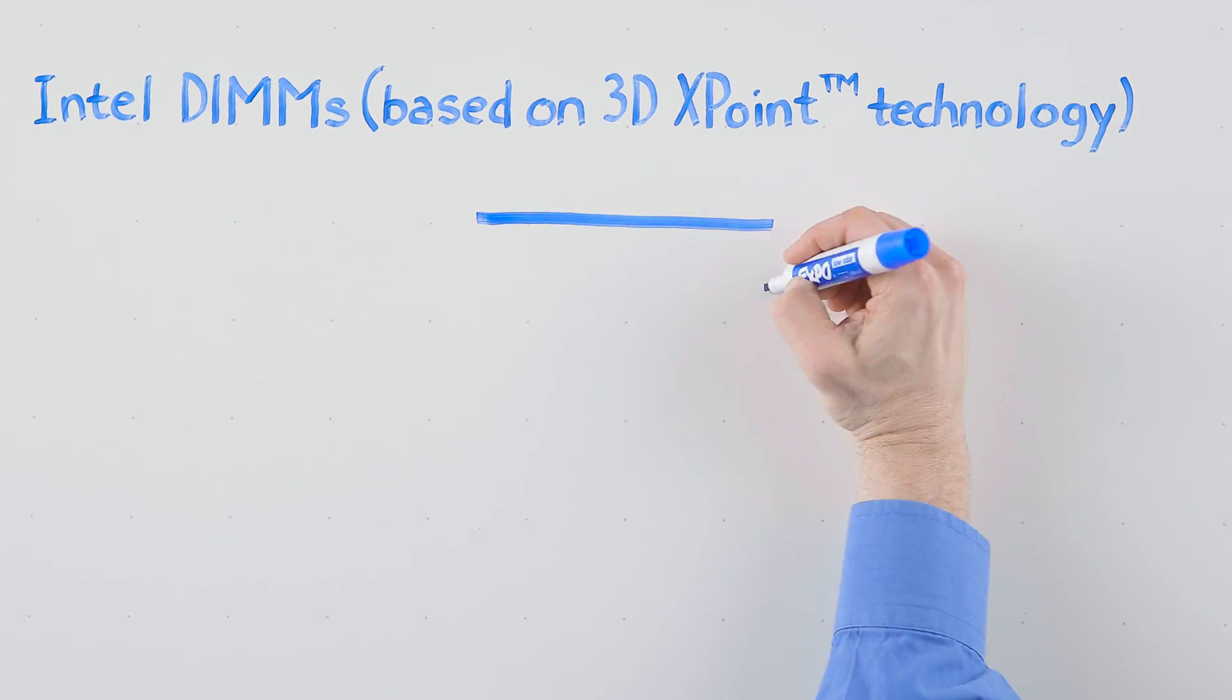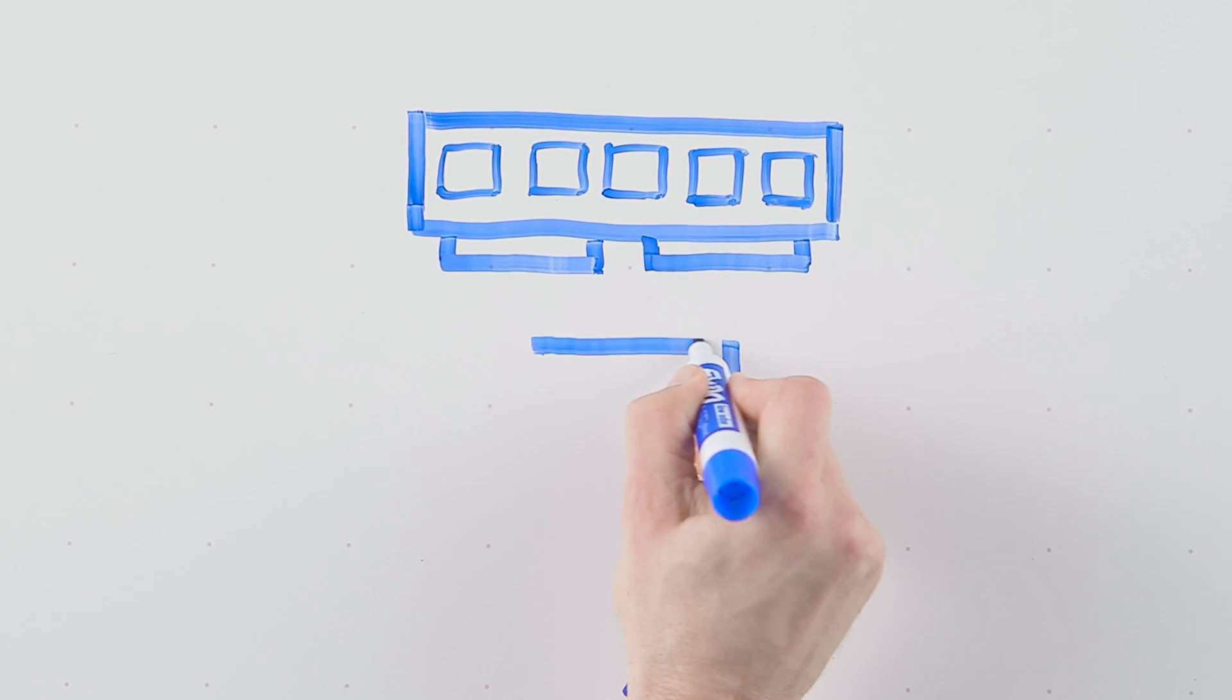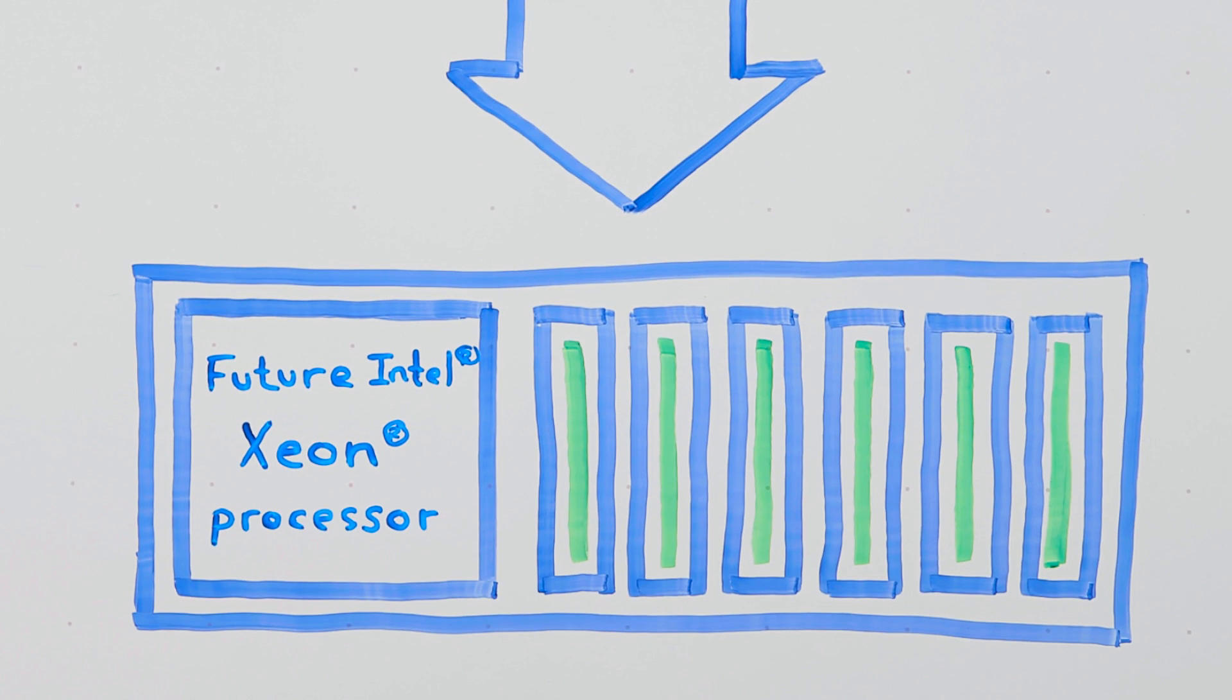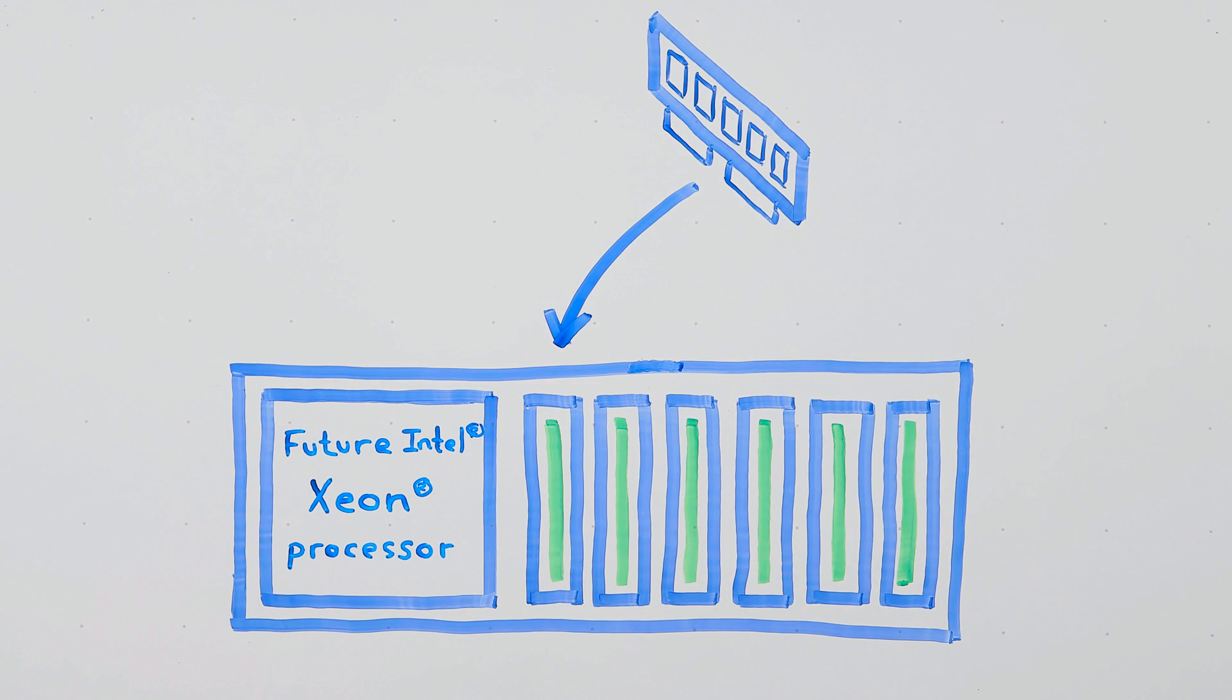Intel DIMMs based on 3D Crosspoint technology attach directly to the processor using the DDR4 Interconnect. This is going to put huge amounts of memory right next to the processor running at processor speeds.